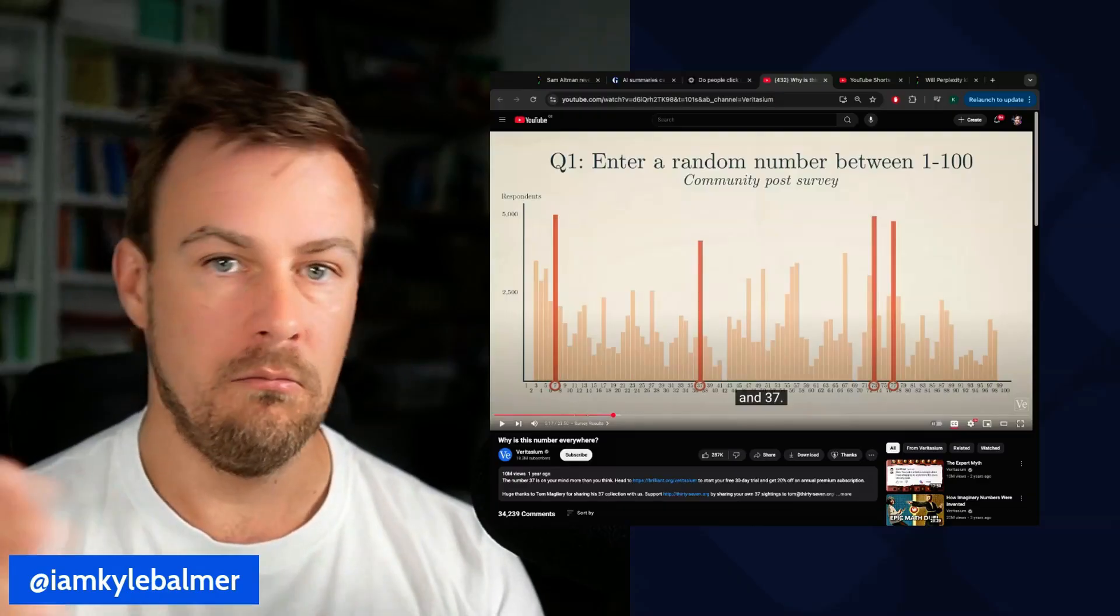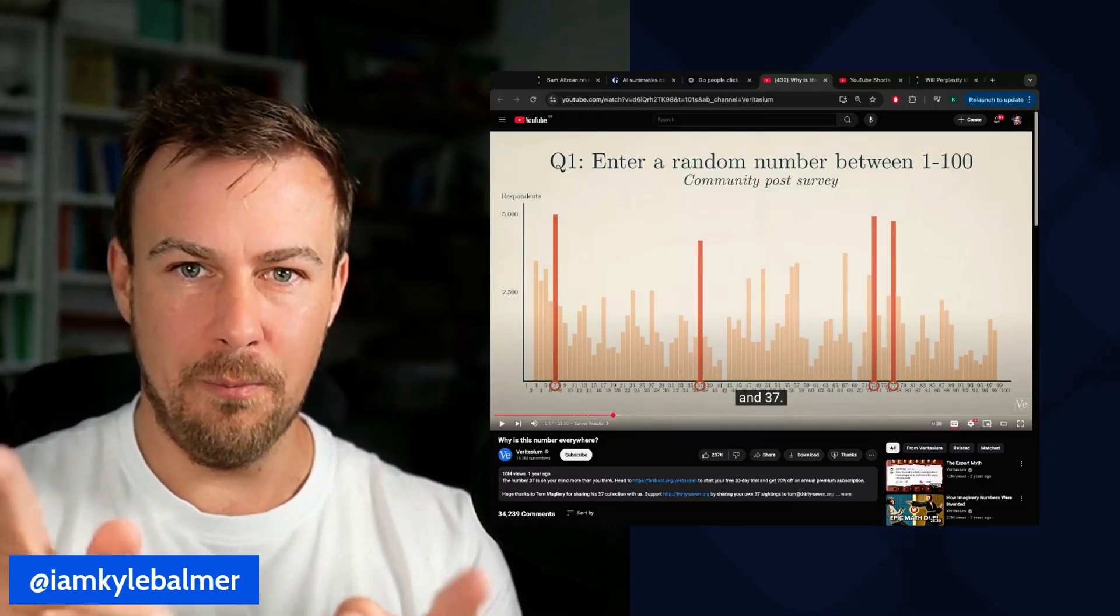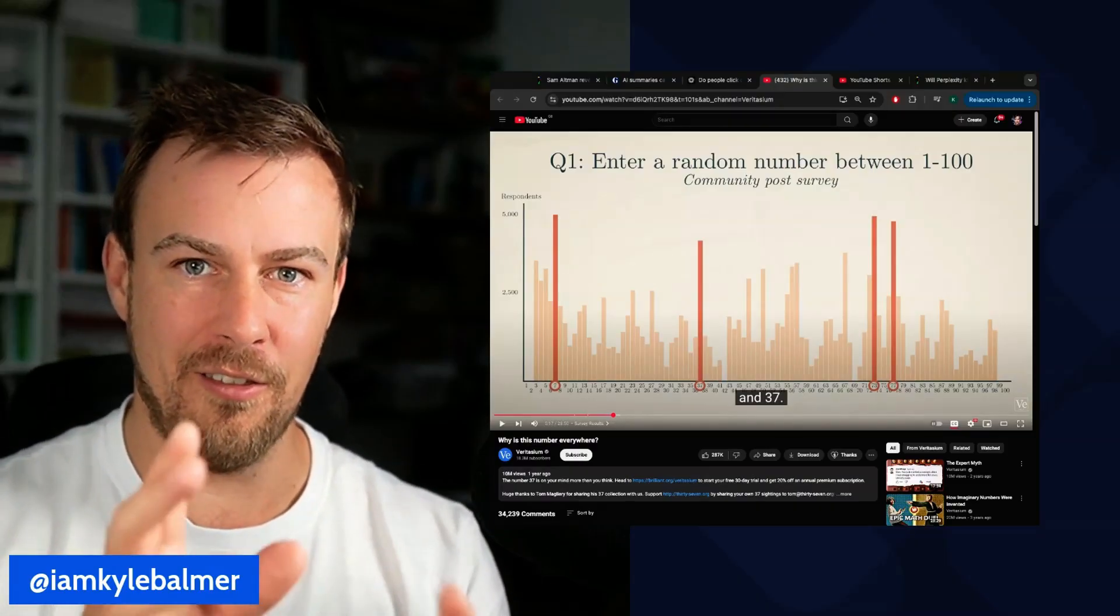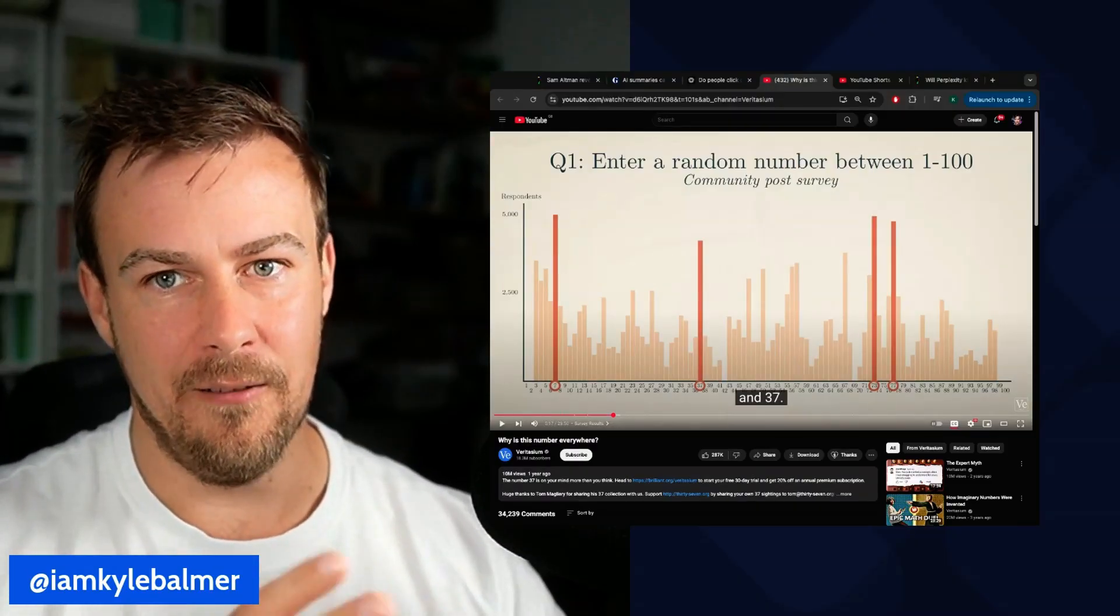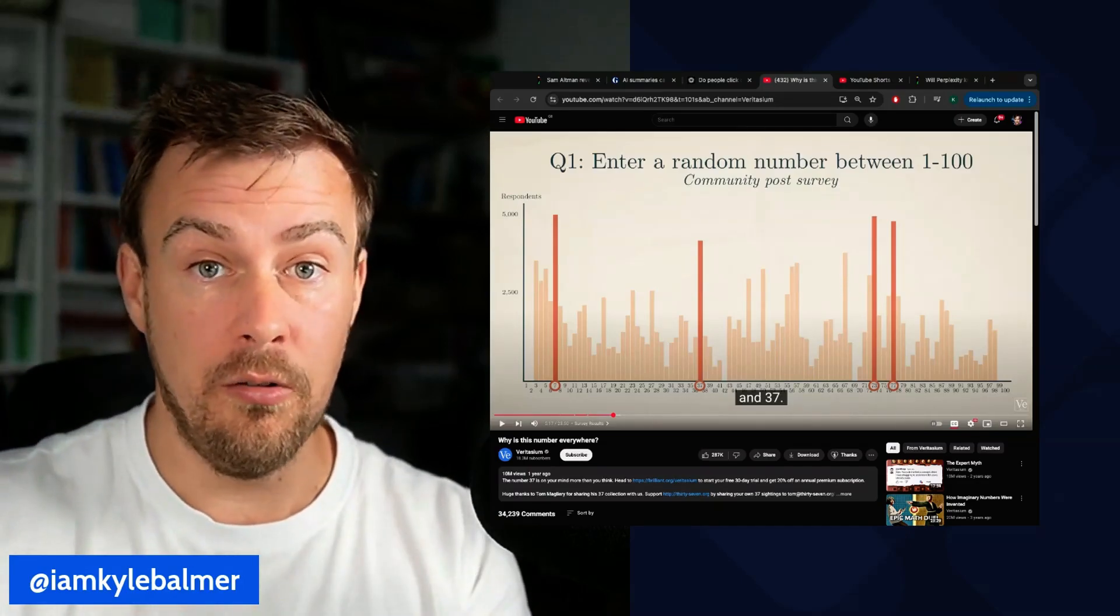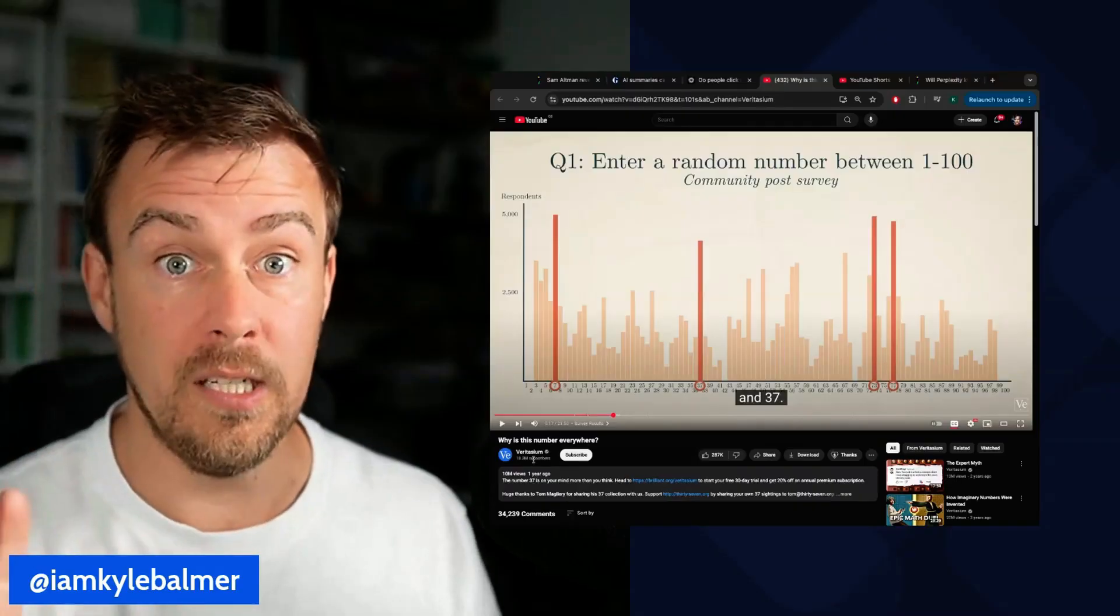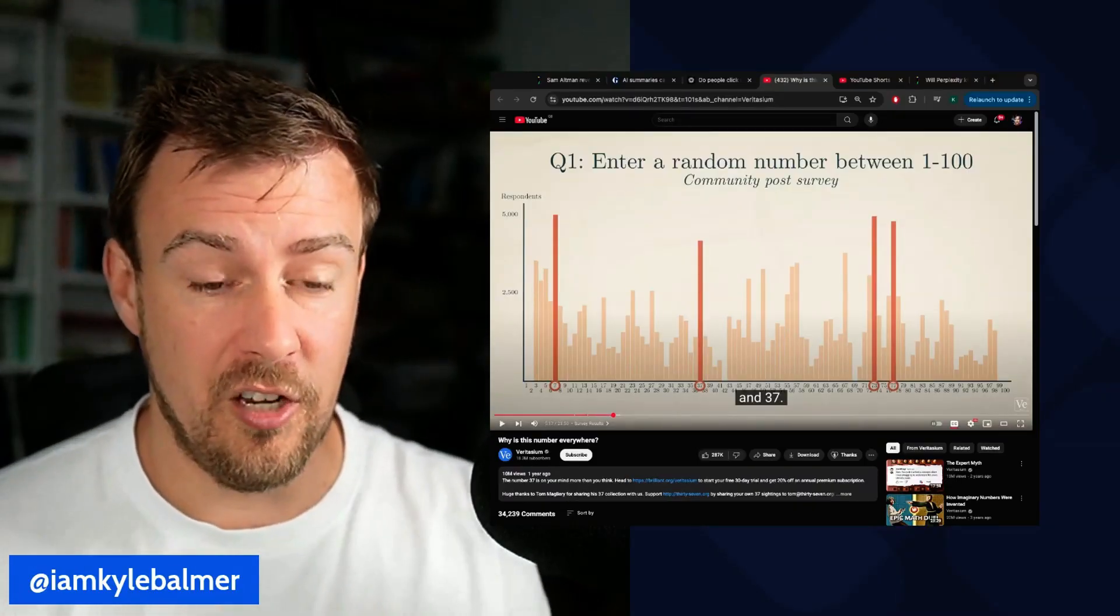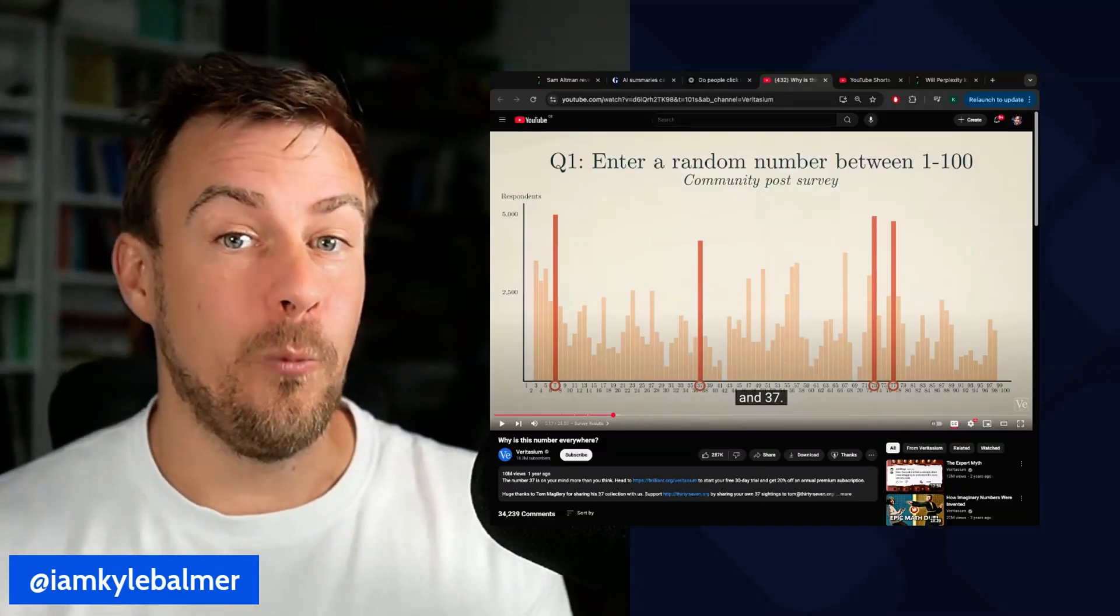And 37 is the number that we all land on because it's not one. It's not a hundred. It's not 50. It's not 25. So it's not between the halfway points, but it's between the halfway points of kind of 35, but you wouldn't want to put a five on the end of it because again, that's a factor. So you do 37. So we just tend in on this 37 number. And this video by Veritasium goes into all the details about why this is. It's a special prime number, et cetera, et cetera.